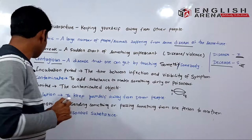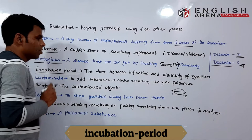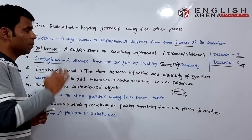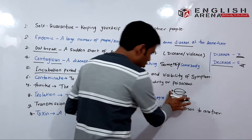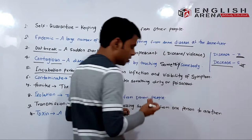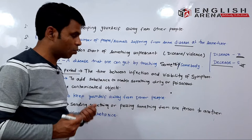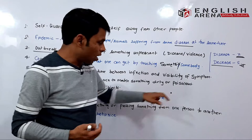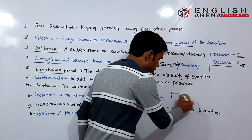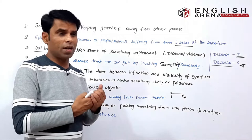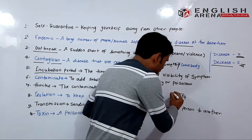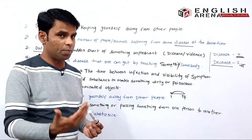The next word is 'incubation period.' The time between infection and visibility of symptoms. Agar maan lo kisi vyakti ko corona ka infection hua ek tarikh ko — corona mein kaha jaata hai ki incubation period 2 to 15 din ka hota hai. Toh agar usko corona se sankramit hua ek tarikh ko, aur saat tarikh ko uske symptoms dikhai dene lage — yaani wo beemar ho gaya, usse khansi aane lagi, bukhaar aa gaya — yeh jo ek tarikh se saat tarikh ke beech ka period hai, ise hum kehte hain 'incubation period.' The word is pronounced as 'incubation period.'